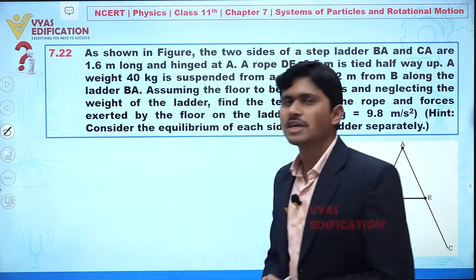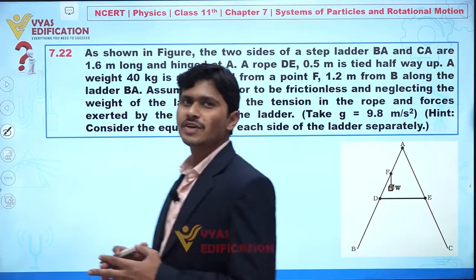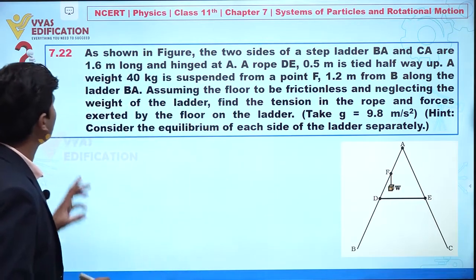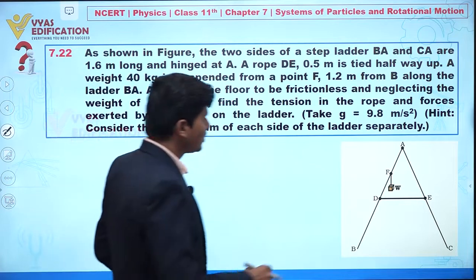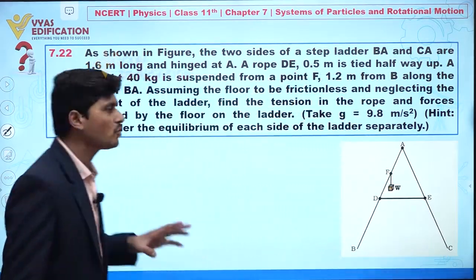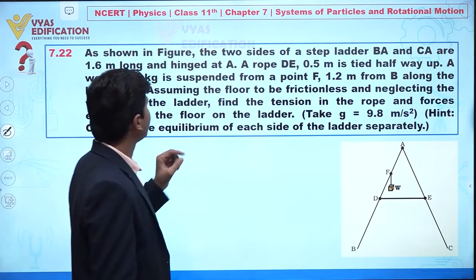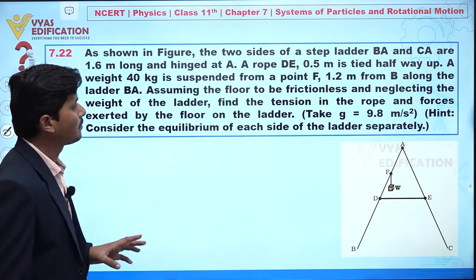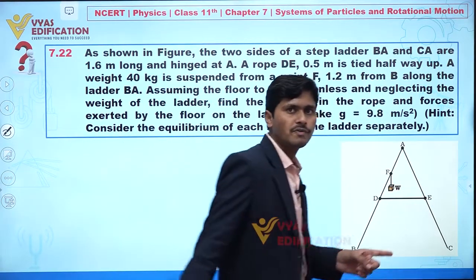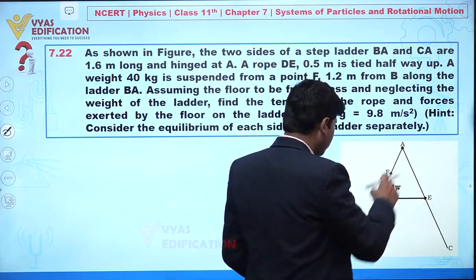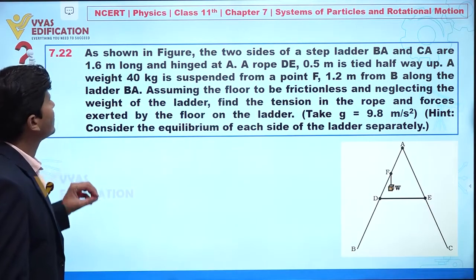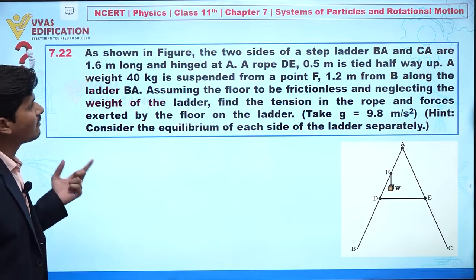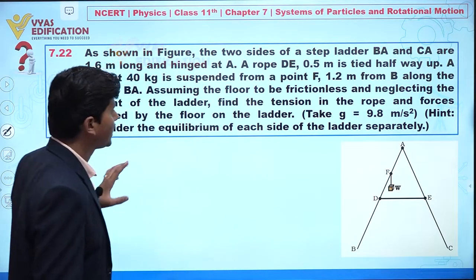We are going to discuss question number 7.22. In this question, the two sides of a step ladder BA and CA are 1.6 meters long. At point A, a rope DE of 0.5 meters is tied halfway up. A weight of 40 kg is suspended from point F, which is 1.2 meters from B.